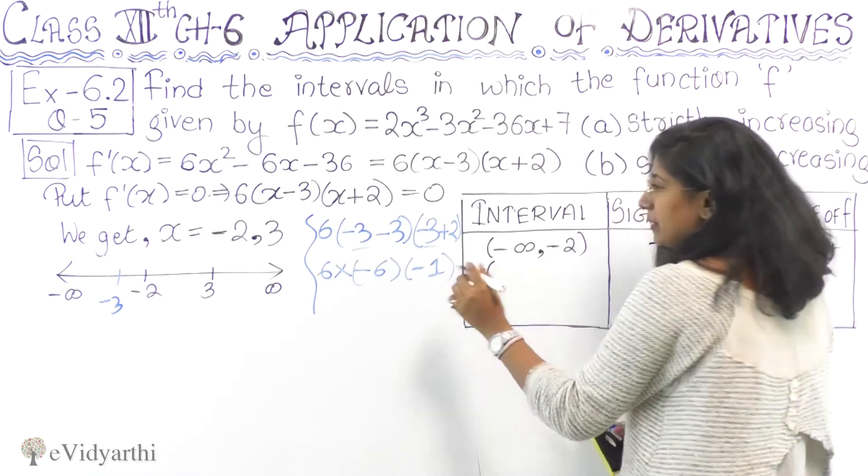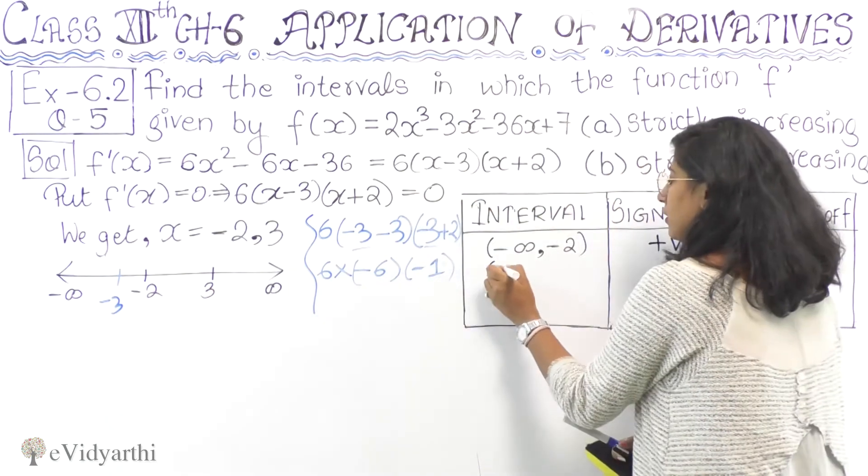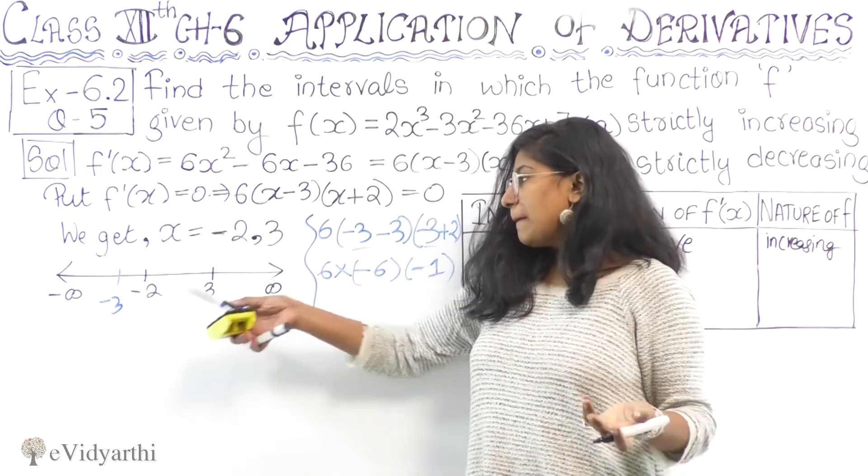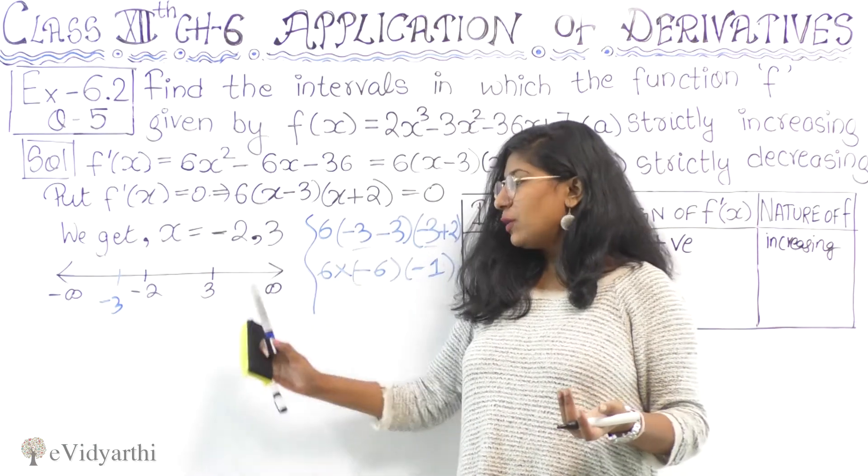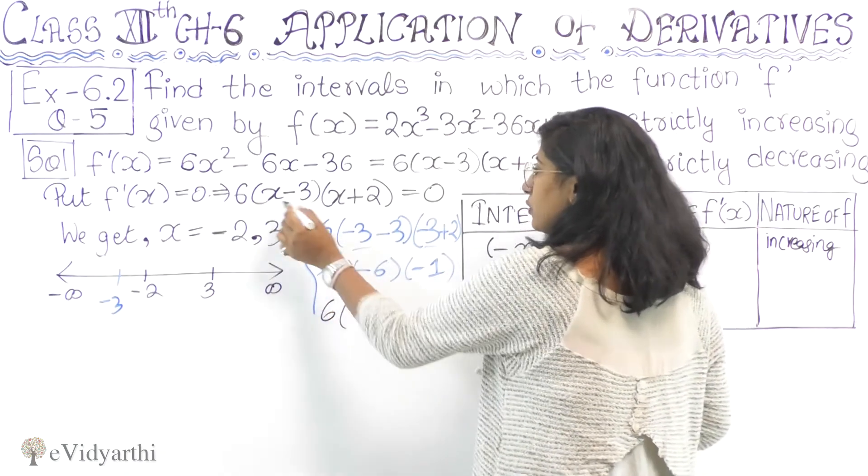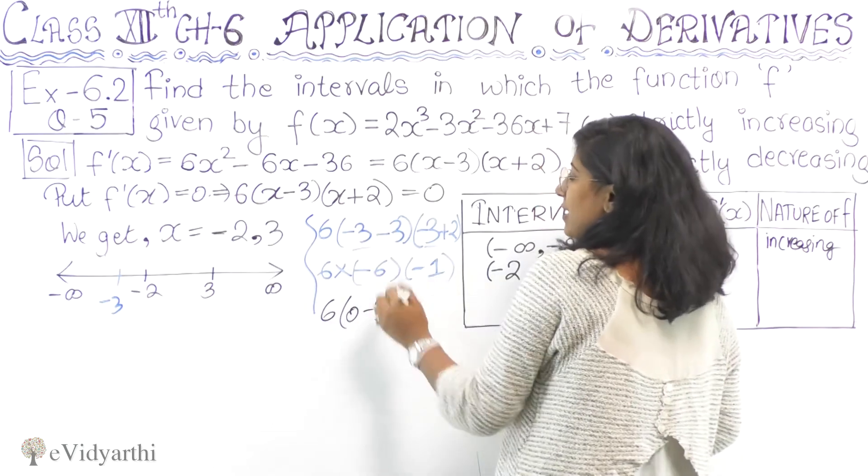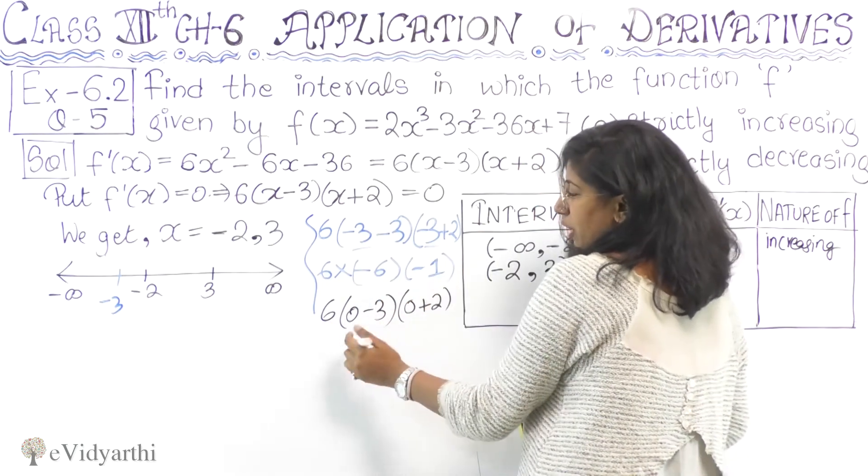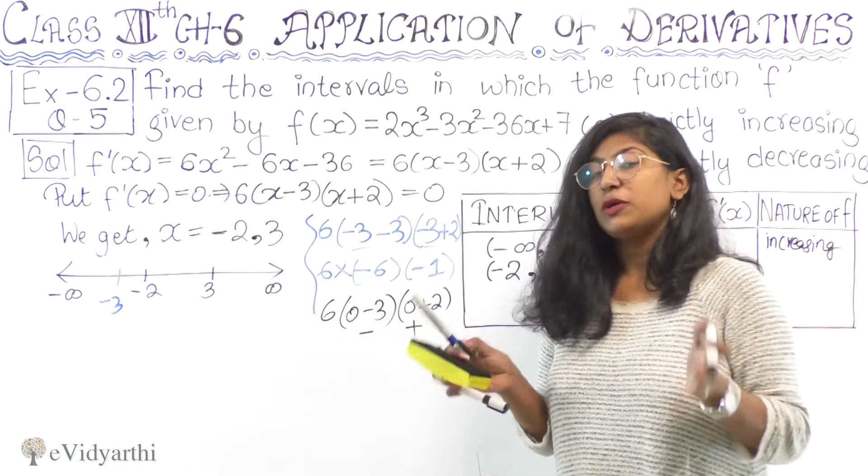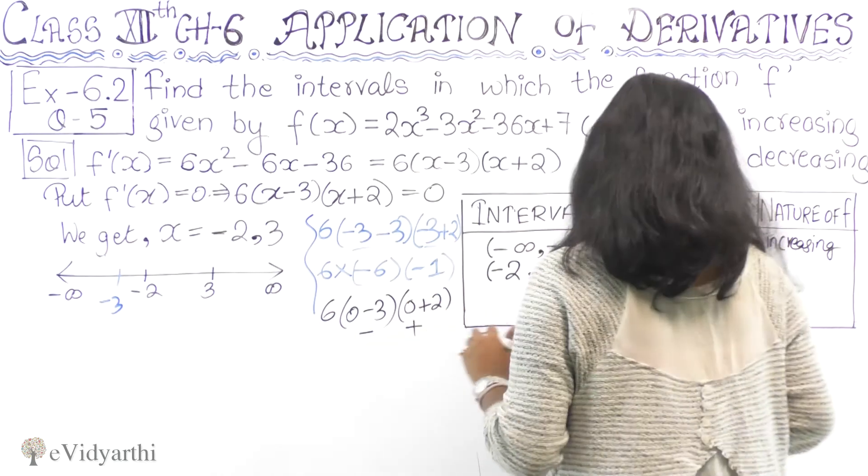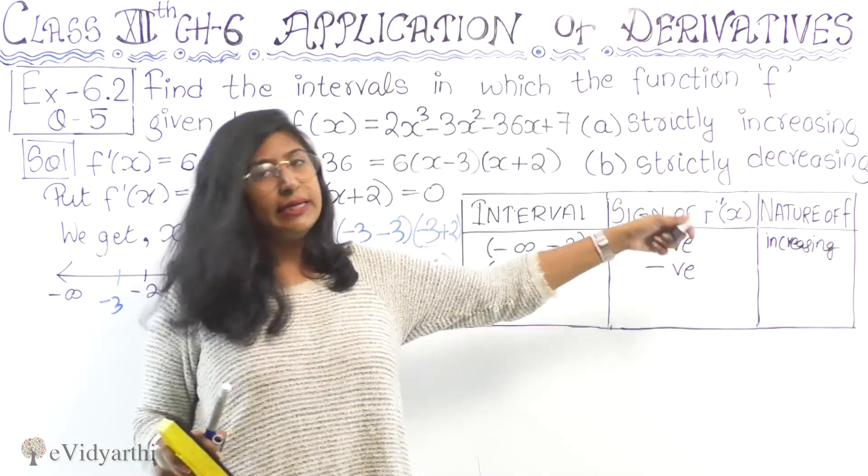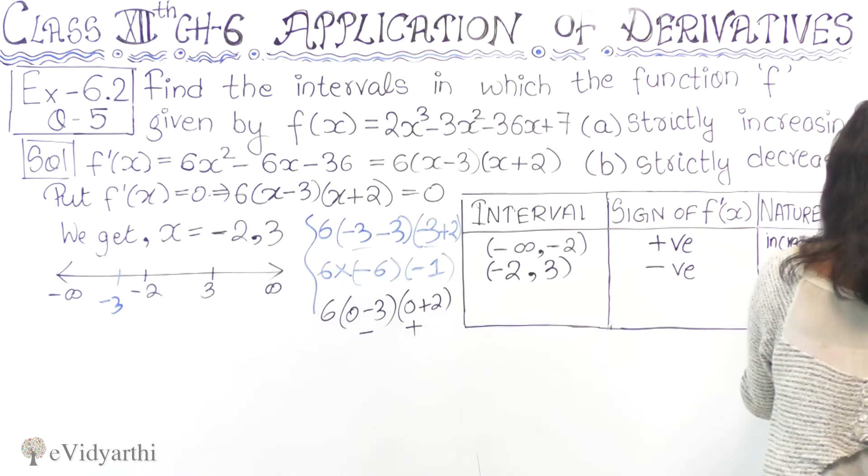For the second interval (-2, 3), let's take x = 0. Putting it in, we get 6(0 - 3)(0 + 2) = 6(-3)(2), which is negative. So the sign is negative, meaning decreasing.